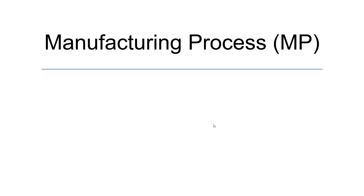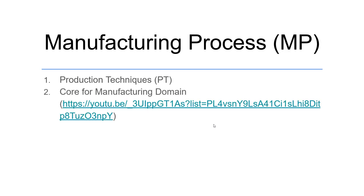Manufacturing Process is commonly shortened to MP by engineering students, and Production Techniques is shortened to PT. In the mechanical engineering curriculum there may be two courses — Production Techniques 1 and 2, or Manufacturing Process and Advanced Manufacturing Process. In this video I'm going to give you an overall picture of all the manufacturing processes without differentiating between these variants, since the names may change over years.